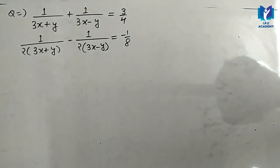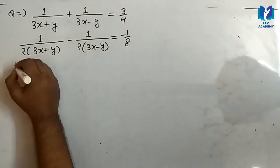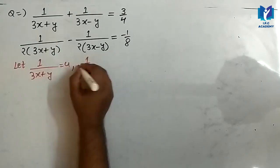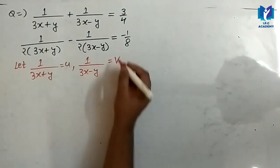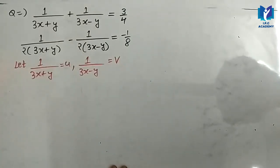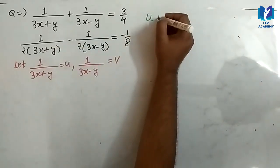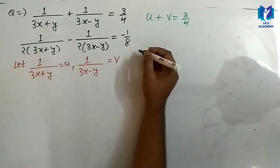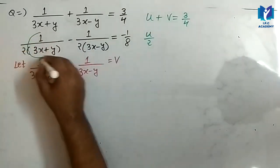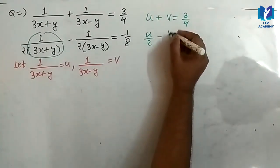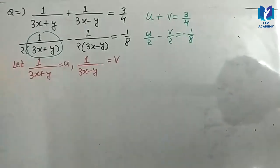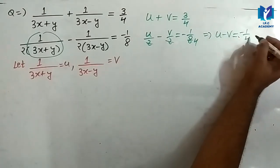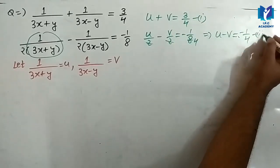यह हमें question दिया हुआ है, पर इस question को हम reducing method से करना चाहते हैं. तो सबसे पहले हमें let करना होगा. अगर मैं इन दोनों equations को reduce करना चाहता हूँ, तो मेरे पास पहले equation निकल कराएगी u plus v, which is equal to 3 by 4. And 2nd equation से u minus v equal to 1 upon 4. It is 1st equation and it is 2nd equation.